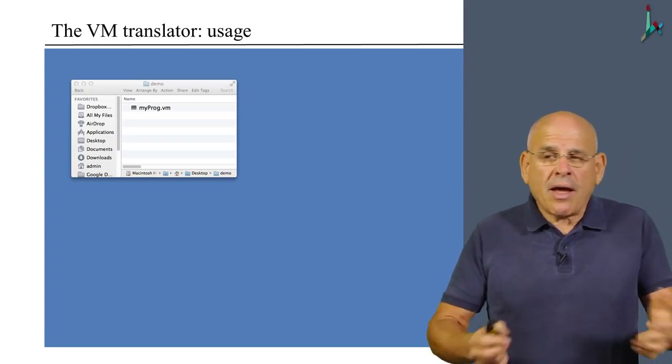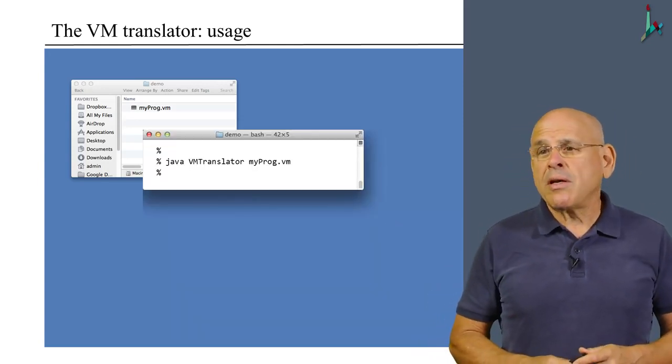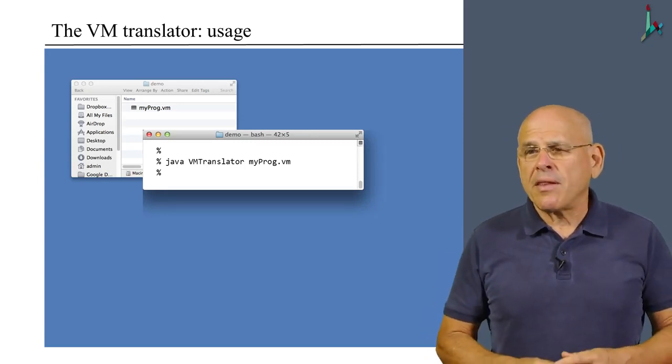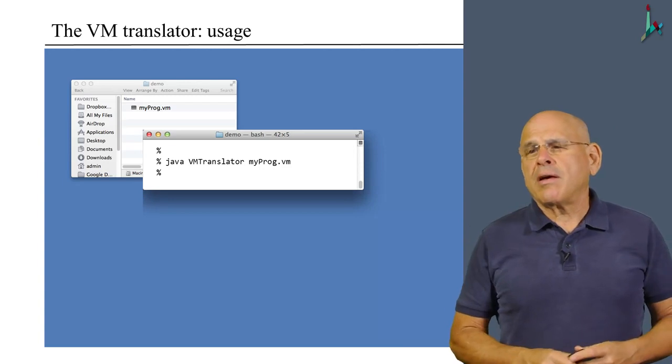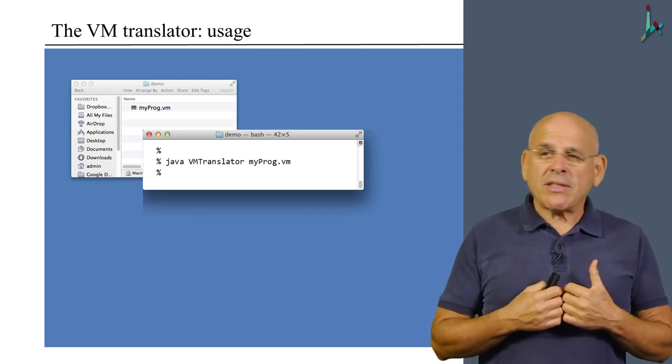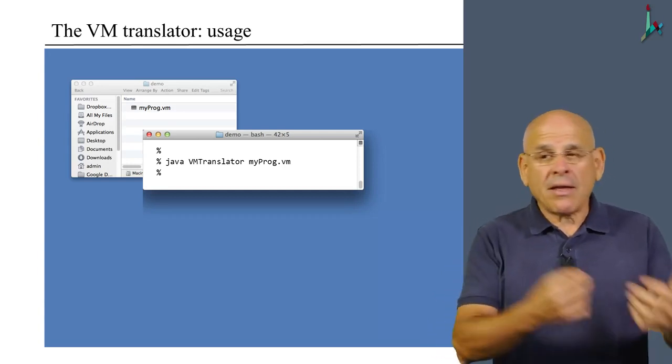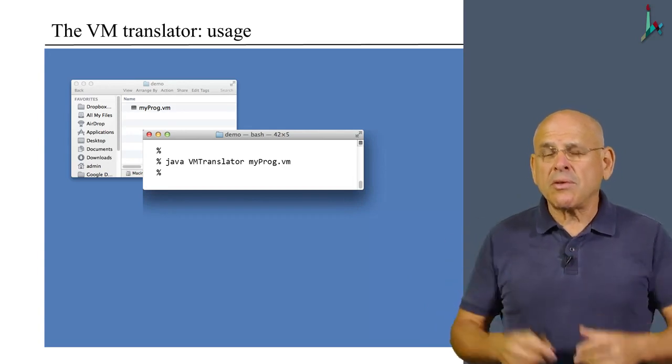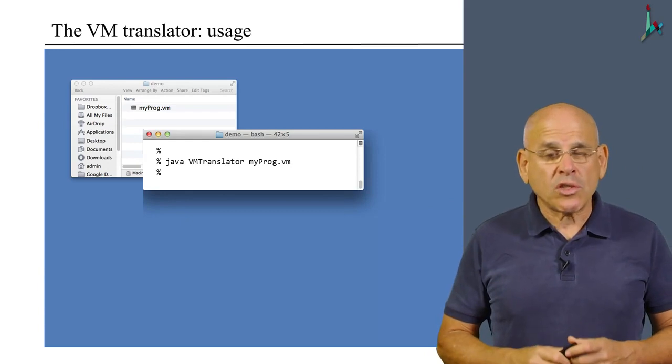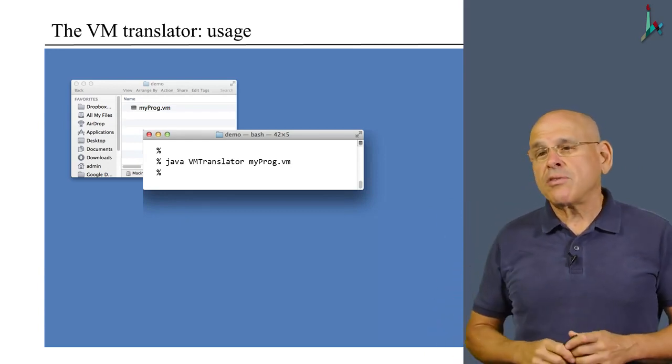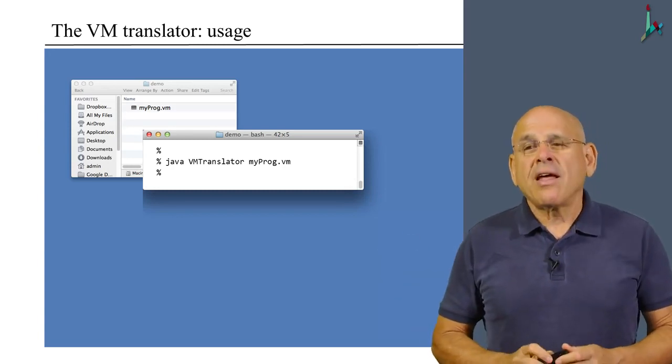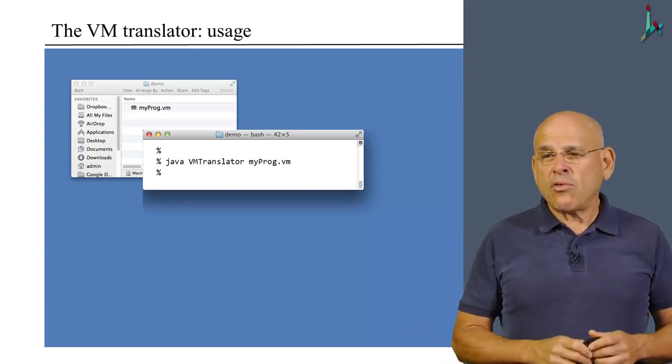On my computer, I open a terminal window. If this were Windows, I would probably do the same using the command prompt. And then, because I wrote this VM translator using Java, I apply the Java runtime system to my VM translator. And I supply the name of the source program as a parameter to my VM translator. And once the translation has ended,